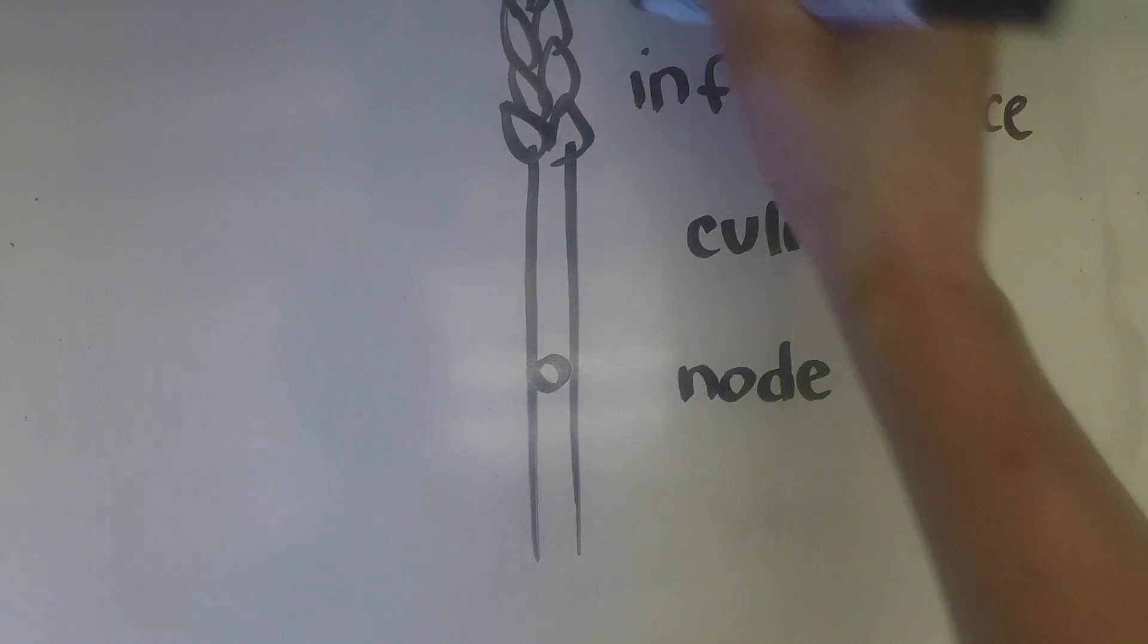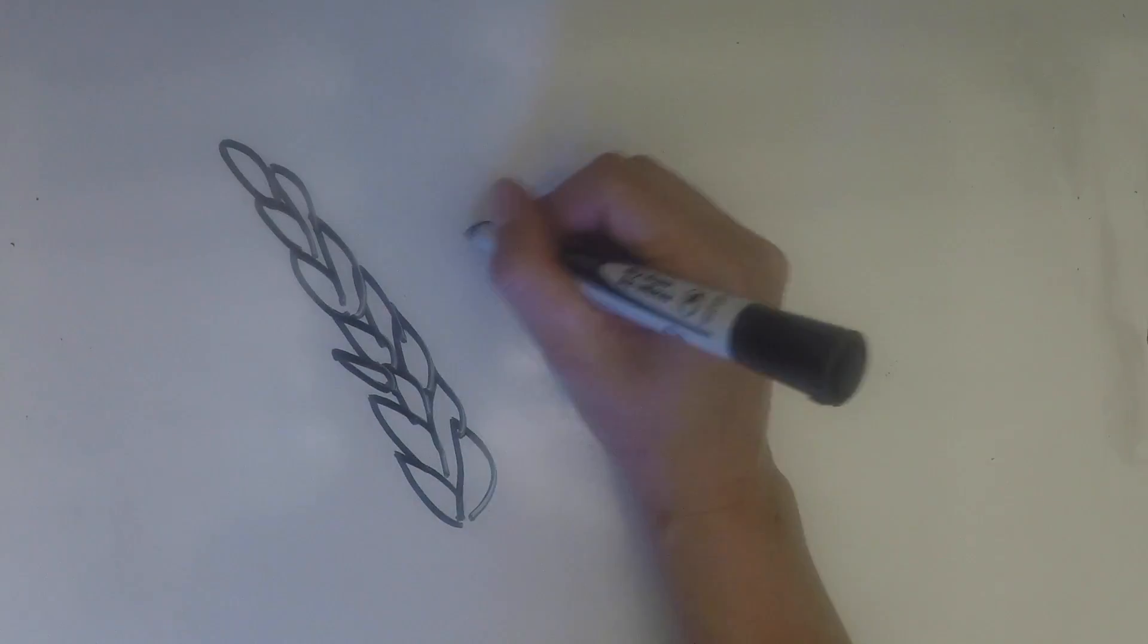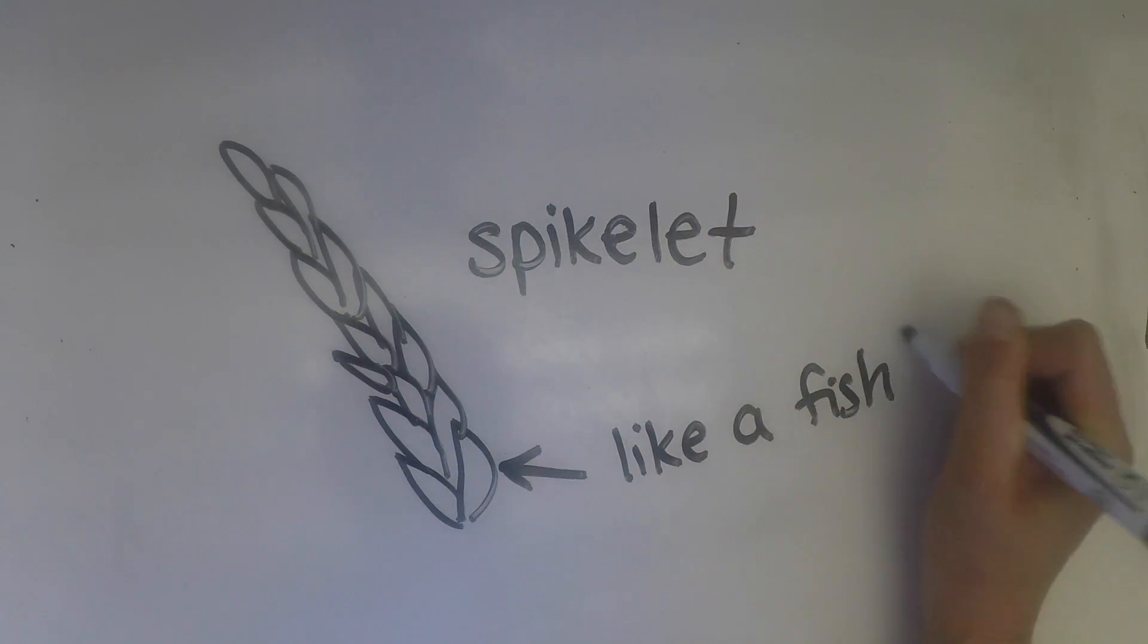The inflorescence at the top is the flowering portion of the stem. It is composed of spikelets, appearing as overlapping scales like on a fish.